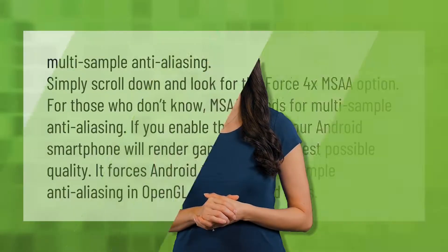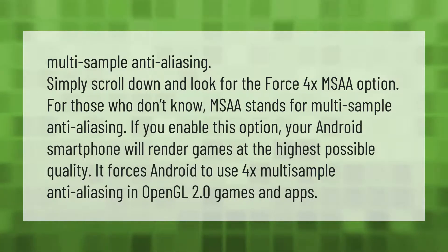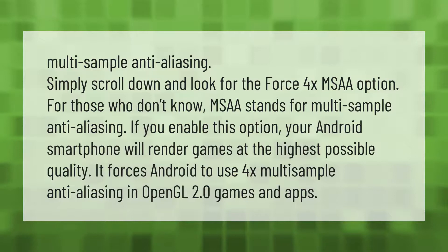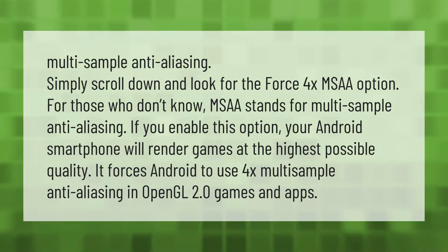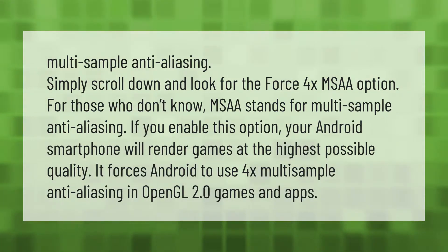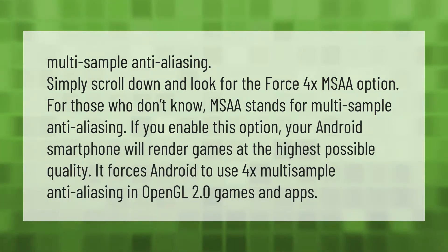For Multi-Sample Anti-Aliasing, simply scroll down and look for the Force 4x MSAA option. If you enable this option, your Android smartphone will render games at the highest possible quality. It forces Android to use 4x multi-sample anti-aliasing in OpenGL 2.0 games and apps.